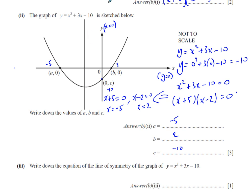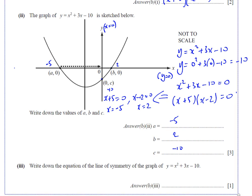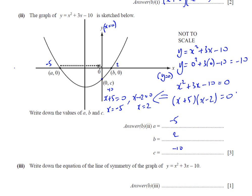Now, if it's symmetrical, then the distance between minus 5 and the line of symmetry must be the same distance as between 2 and the line of symmetry. Those 2 distances must be the same. So that means that the point here where it passes through the midpoint is minus 1.5. To find the midpoint would be minus 5 + 2 divided by 2, which is going to give you minus 3 over 2, so that's going to give you minus 1.5.